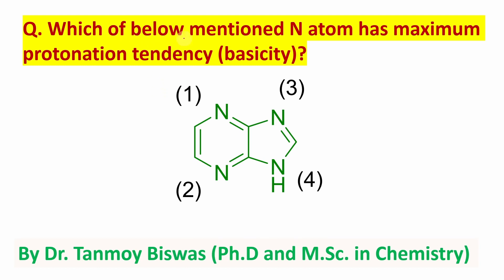Now the question is: which of the below mentioned nitrogen atoms — 1, 2, 3, 4 — has maximum protonation tendency or basicity? So this is actually a question of basicity: which one undergoes protonation most efficiently in this molecule?